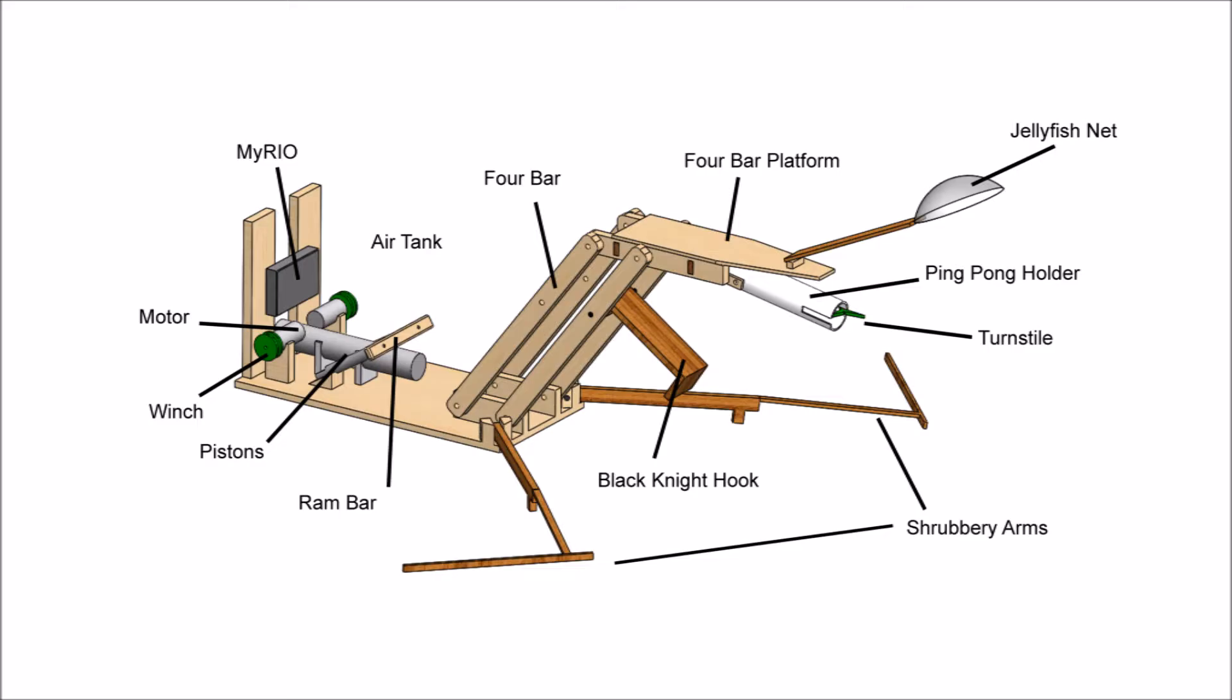The holy hand grenades are held in place with a ping pong holder, which is made of PVC piping and a turnstile. The turnstile ensures that grenades remain fastened from rolling out and are dispensed one at a time. The system is contained on the underside of the 4-bar platform.